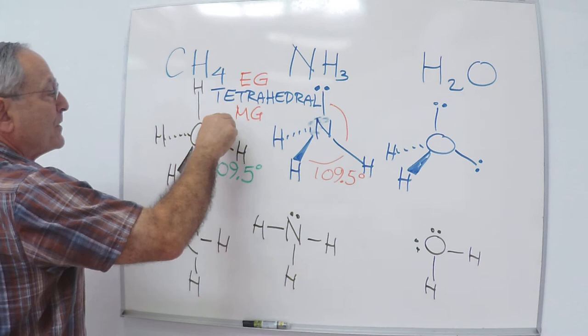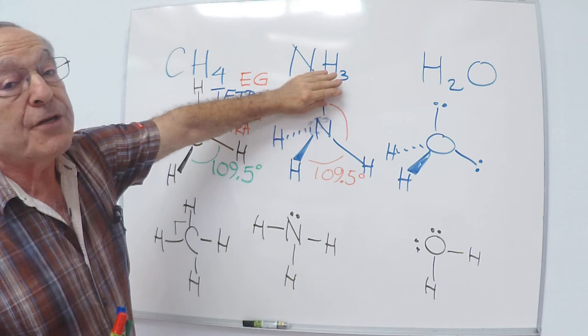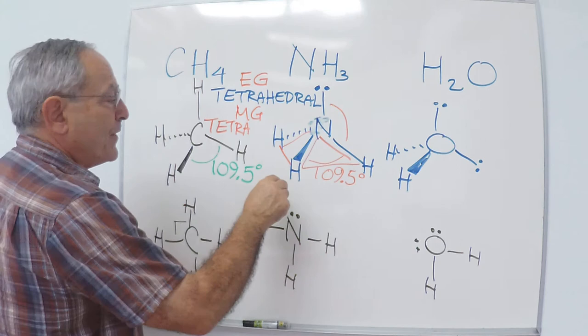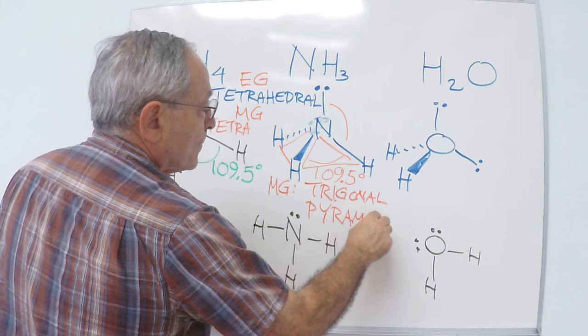When we come to ammonia, though, if we disregard this lone pair, which we have to do to determine the molecular geometry, then what you have left is a three-sided pyramid. The molecular geometry of ammonia, and notice this is not flat, this is not planar, this is called a trigonal pyramid or trigonal pyramidal geometry.